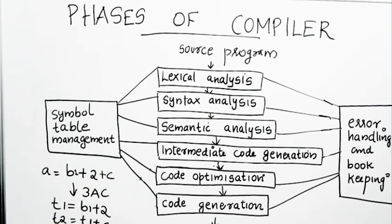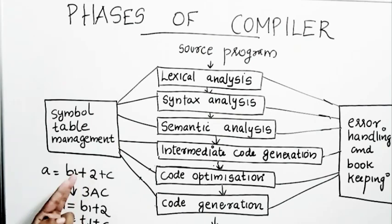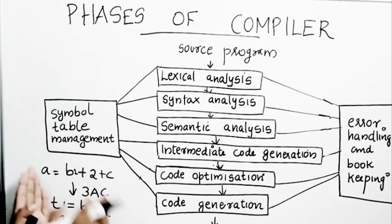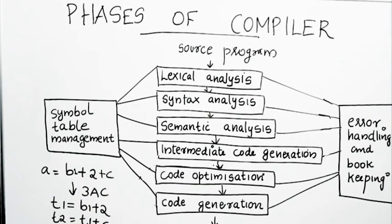The next phase is code optimization. It performs transformations on the code so that it runs faster or takes less memory space, or both — improving the efficiency of the code. For example, for the statement 'a = b1 + 2 + c', if the value of 'a' is never used anywhere in the program, this computation can be avoided entirely. This is known as dead code elimination. We will see code optimization in detail in another video.